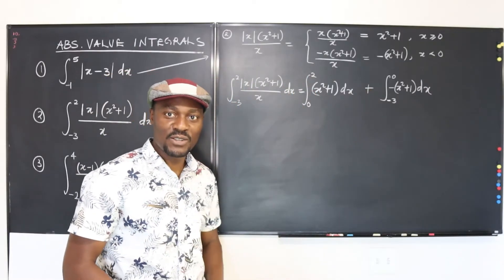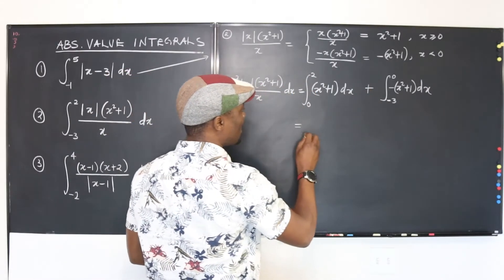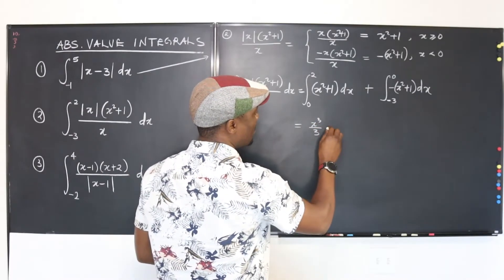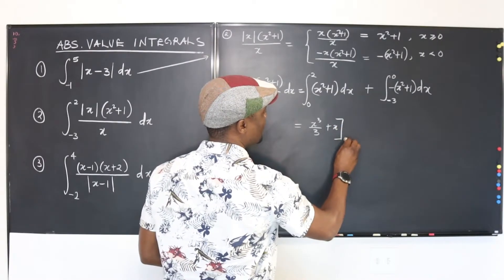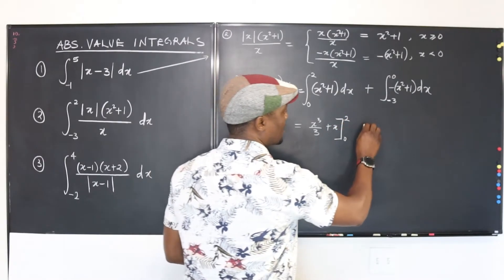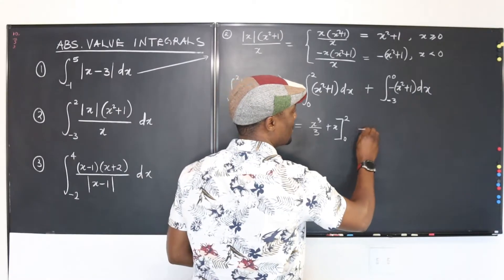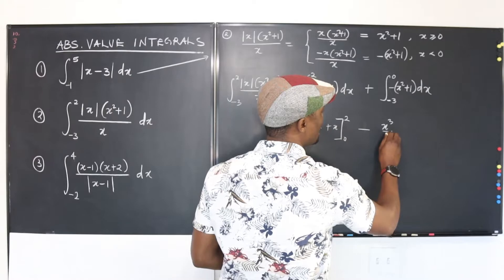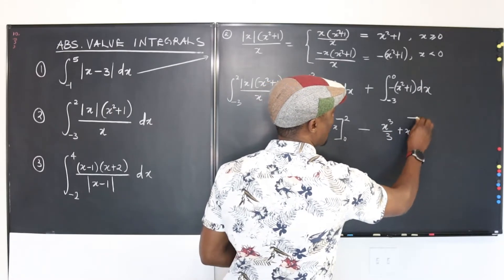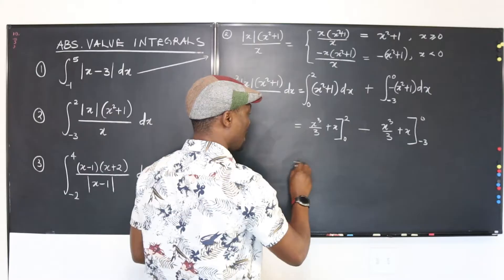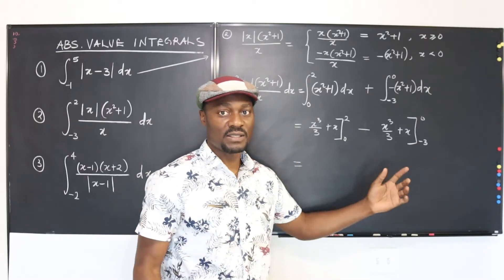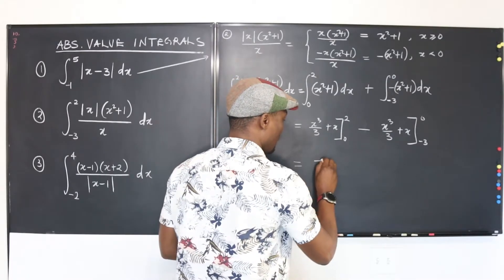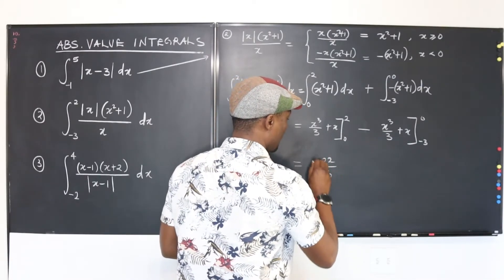So let's integrate. Integrating x squared plus 1 gives x cubed over 3 plus x, evaluated from 0 to 2. The minus sign comes out, and integrating the second piece gives the same form: x cubed over 3 plus x, evaluated from negative 3 to 0. When you evaluate both and combine your answers, the result ends up being negative 22 over 3.